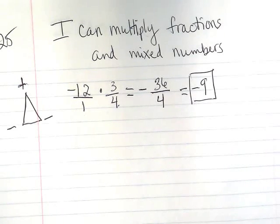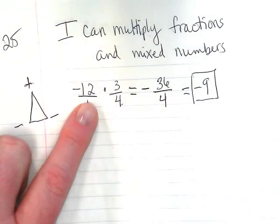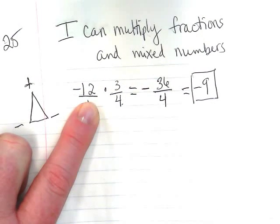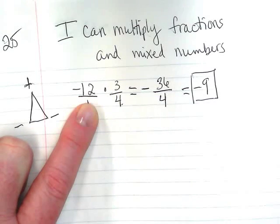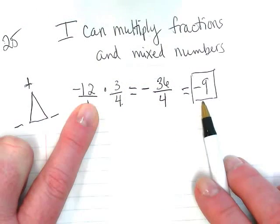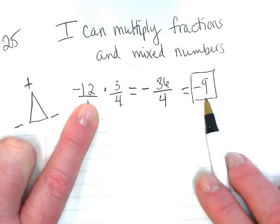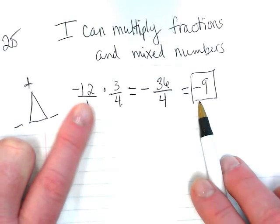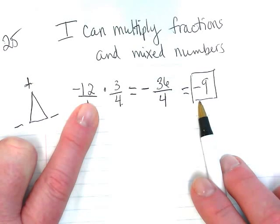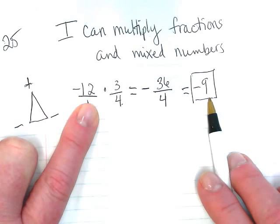So let's go back and think about what that really means. I had a whole negative 12 times 3 fourths. Notice my answer is less than what we started with. At least the number 9 is less than 12. But negative 12 is lower on the number line than our negative 9, isn't it?